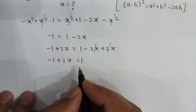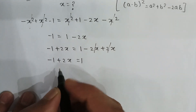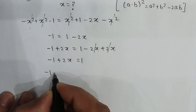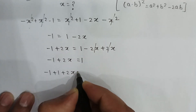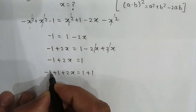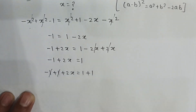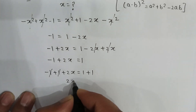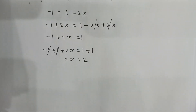Add 1 to both sides. So minus 1 plus 1 plus 2x is equal to 1 plus 1. The 1 cancels with minus 1, so 2x is equal to 2.